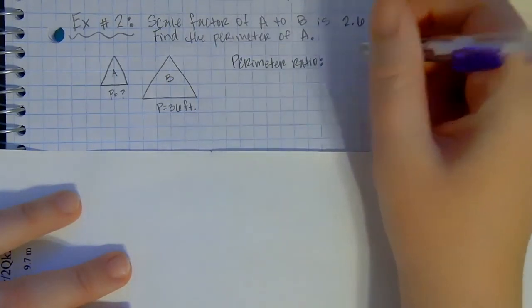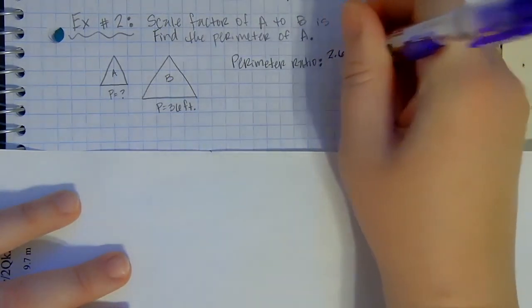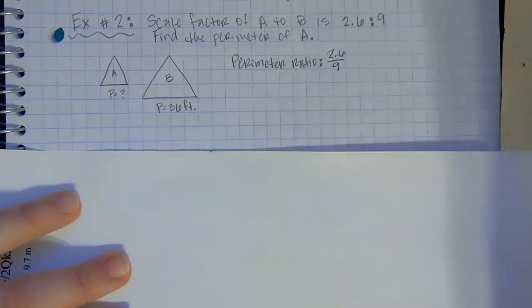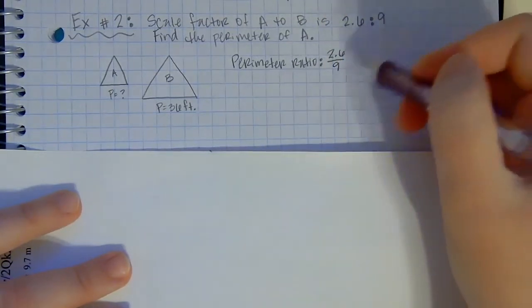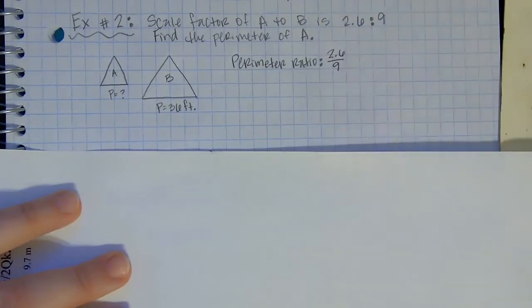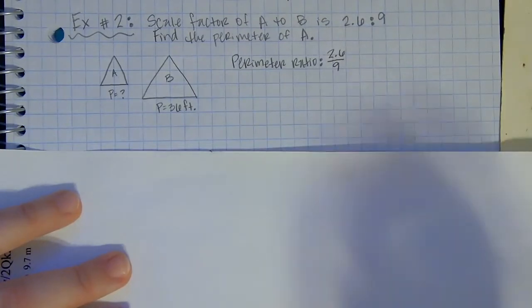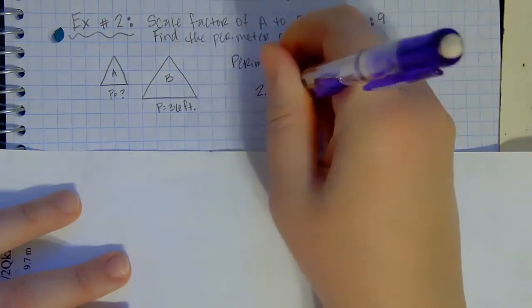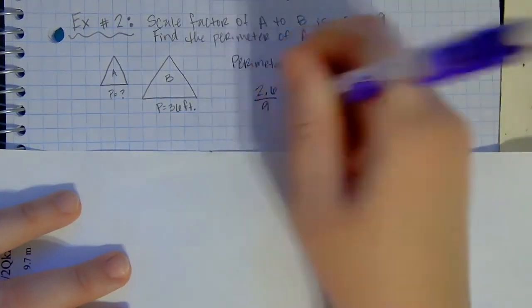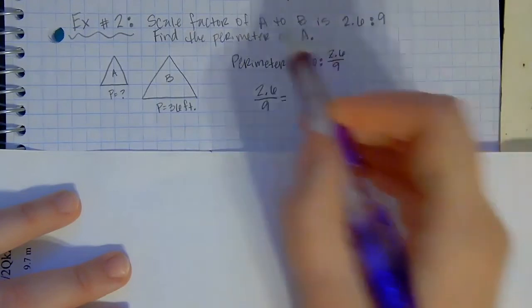Since it's going to be exactly the same, I'm going to write exactly the same thing: 2.6 over 9, it's exactly the same as the scale factor. Now I can use that to help me solve. So my perimeter ratio is 2.6 over 9, and that's from A to B.